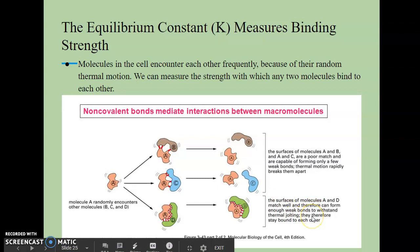Whereas over here, this is telling you that the surfaces of molecules A and D match really well and therefore can form enough weak bonds to withstand the heat moving them around in different places. And so therefore they will stay bound to each other. So really, this is telling you that molecule A has the capability of binding or coming into contact with these three different molecules. However, out of these three different molecules, molecule D is its most appropriate match. And so we have a way mathematically to actually measure the strength of that binding. And that's the whole idea behind the equilibrium constant.